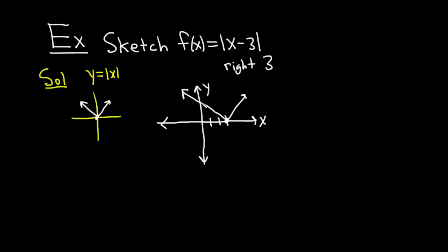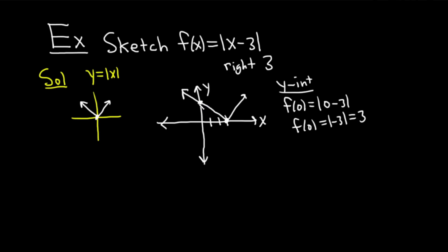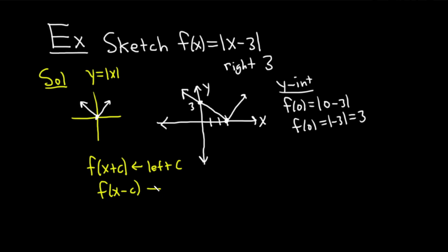Now you might be wondering, should I find the y-intercept? Sure. To find the y-intercept, you always just plug in 0: f of 0 equals the absolute value of 0 minus 3, which is the absolute value of negative 3, which equals 3. Label that on the graph. So to recap: if you have f of x plus c, you're adding to the x so you go left. If you have f of x minus c, you're subtracting from the x so you go right. If you add to the function you go up; if you subtract from the function you go down.